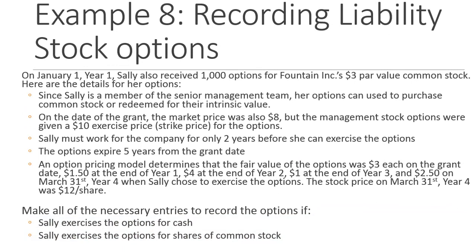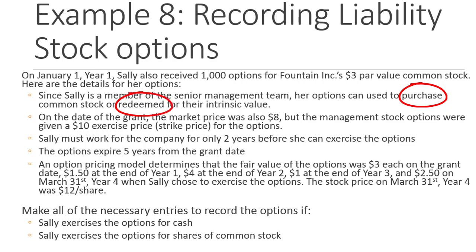Here's our example: Fountains Incorporated with $3 par value common stock, but instead of Alice we now have Sally. Sally also received 1,000 options, but she's a member of the senior management team, so her options can either be used to purchase common stock or be redeemed for their intrinsic value — that's what makes them liability options. On the grant date the market price was $8, but because she's management, the exercise or strike price was raised to $10 each.